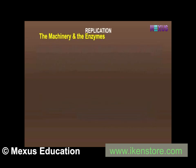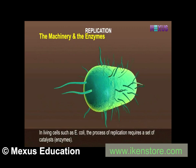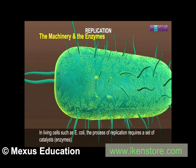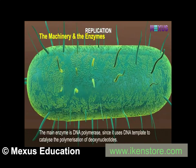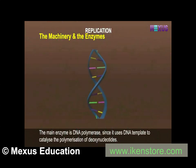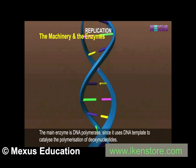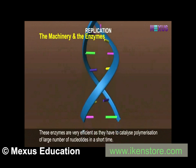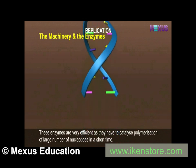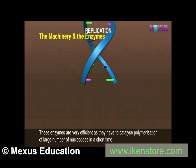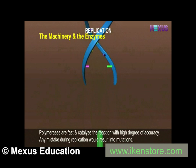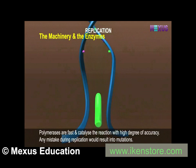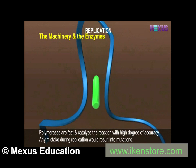The Machinery and the Enzymes. The process of replication in living cells such as E. coli requires a set of catalyst enzymes. The main enzyme is DNA polymerase, which uses a DNA template to catalyze the polymerization of deoxynucleotides. These enzymes are very efficient, catalyzing polymerization of a large number of nucleotides in a short time with a high degree of accuracy. Any mistake during replication would result in mutations.